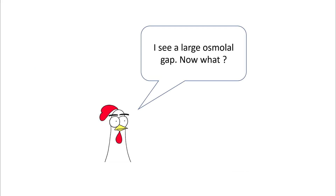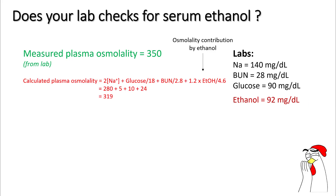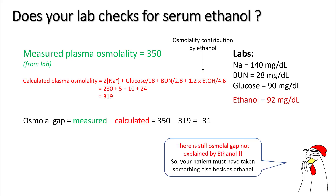So let's look at the next few steps. Check if your lab gives you ethanol levels. Say for example your ethanol level was 92. You go ahead and find the osmolality contribution by ethanol using the divisor 4.6, and you find your calculated plasma osmolality to be 319. Your osmolal gap now is 31; however, you still have a gap that is not explained by ethanol, so your patient must have taken something else beside ethanol.